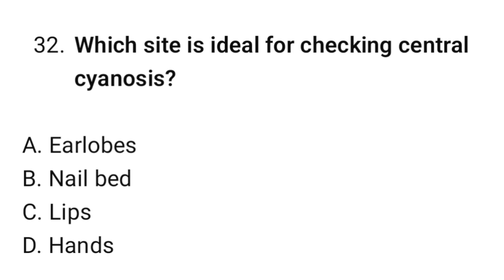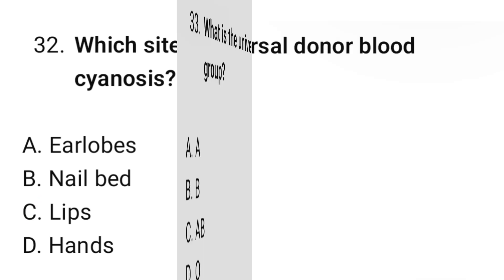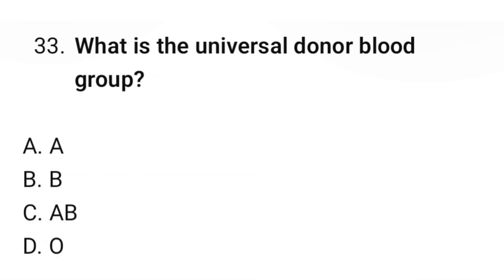Question number 32: What site is ideal for checking central cyanosis? The correct option is C: Lips. Question number 33: What is the universal donor blood group? The correct option is D: O negative.